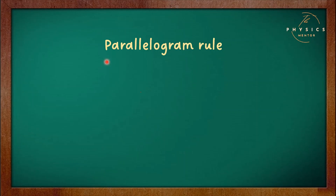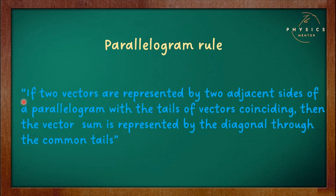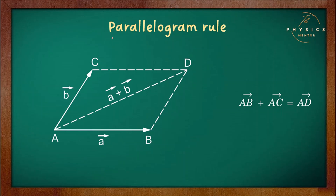Another rule for vector addition is the parallelogram rule of vector addition. According to the parallelogram rule, if two vectors are represented by two adjacent sides of a parallelogram with the tails of the vectors coinciding, then the vector sum is represented by the diagonal through the common tails.